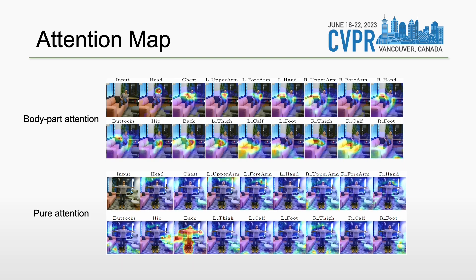Here we show the learned attention maps. Our model attends to meaningful regions around each human part, whereas the pure attention model attends to the full body on certain channels. The rest are distracted by the background.